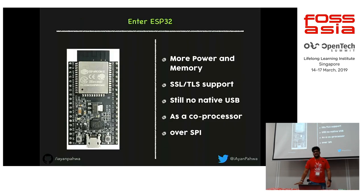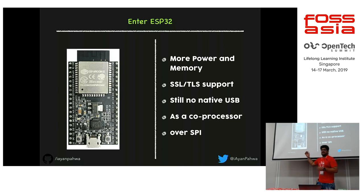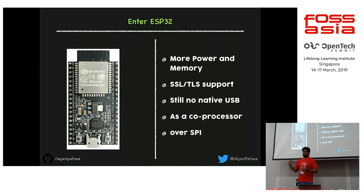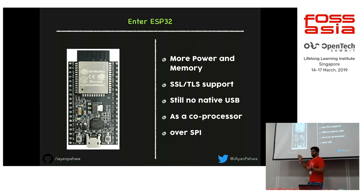ESP32 is the bigger brother of ESP8266 — more power, more memory, and SSL/TLS support. But it also lacks native USB support, so CircuitPython support isn't there either, though you can still use it as a co-processor. The best part: you can interface it over SPI for more speed.